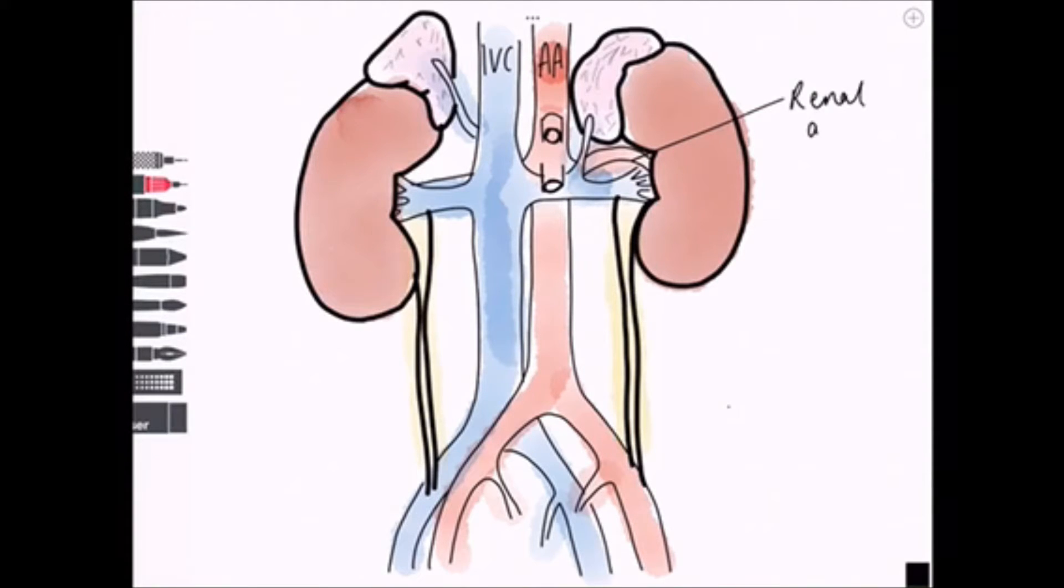Here's a renal artery branching off the abdominal aorta, and here's a renal vein branching from the IVC. It's important to note that the renal arteries arise just inferior to the superior mesenteric artery.